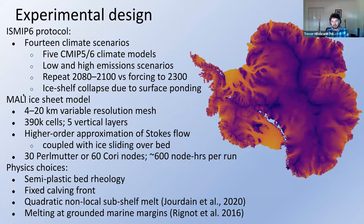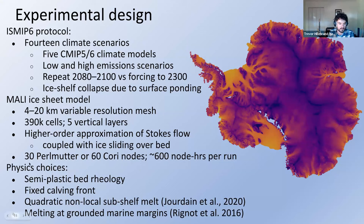Our ice sheet model, MOLLE, is a thermomechanically coupled 3D higher-order ice sheet model. We use a 4 to 20 kilometer variable-resolution mesh covering all of Antarctica, comprising 400,000 cells in five vertical layers. We use a high-order approximation of Stokes flow coupled with sliding to solve for velocity and thickness evolution. We run on 30 Perlmutter nodes or 60 Cori nodes, with roughly 600 node-hours per run. We use a semi-plastic rheology for sliding and a fixed calving front, along with community-standard parameterizations for melt at the ice-ocean interface.